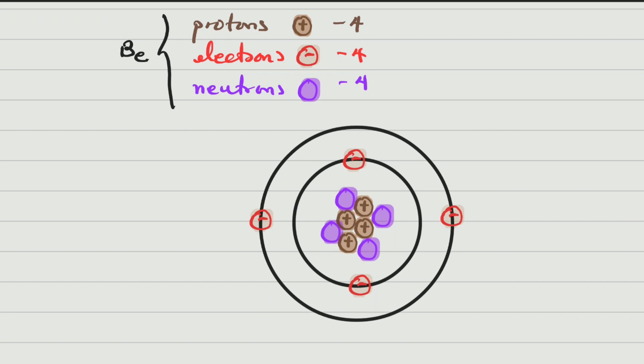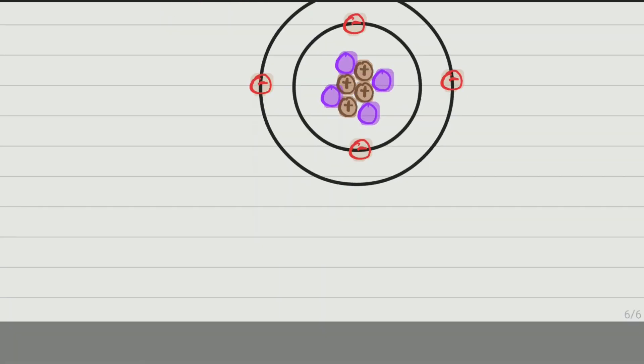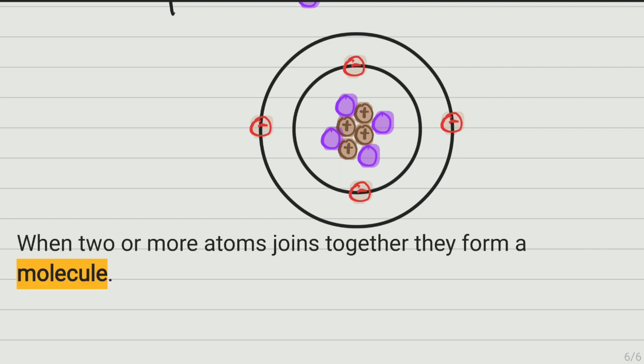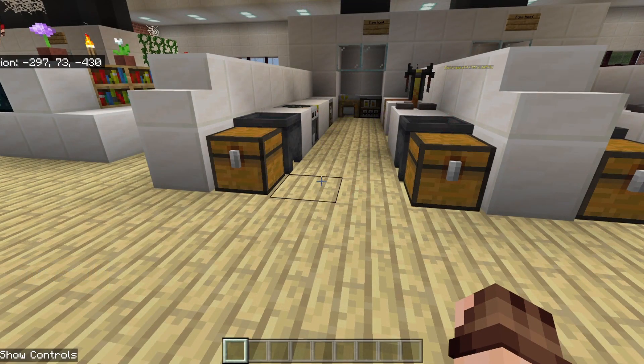This is just a single atom, but most of the time atoms combine with each other. If two or more atoms join together, they form a molecule. We're going to be looking at this now.